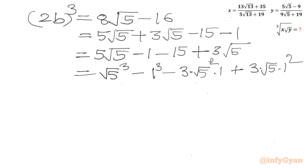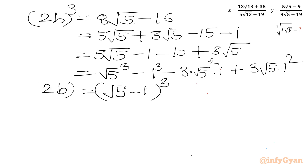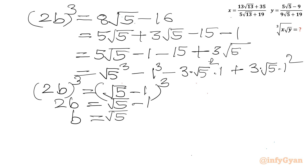Recognizing (√5)³ − 3(√5)²·1 + 3·√5·1² − 1³ = (√5 − 1)³, so (2b)³ = (√5 − 1)³. Left hand side is (2b)³. Taking the cube root of both sides: 2b = √5 − 1. So b will be (√5 − 1) over 2.